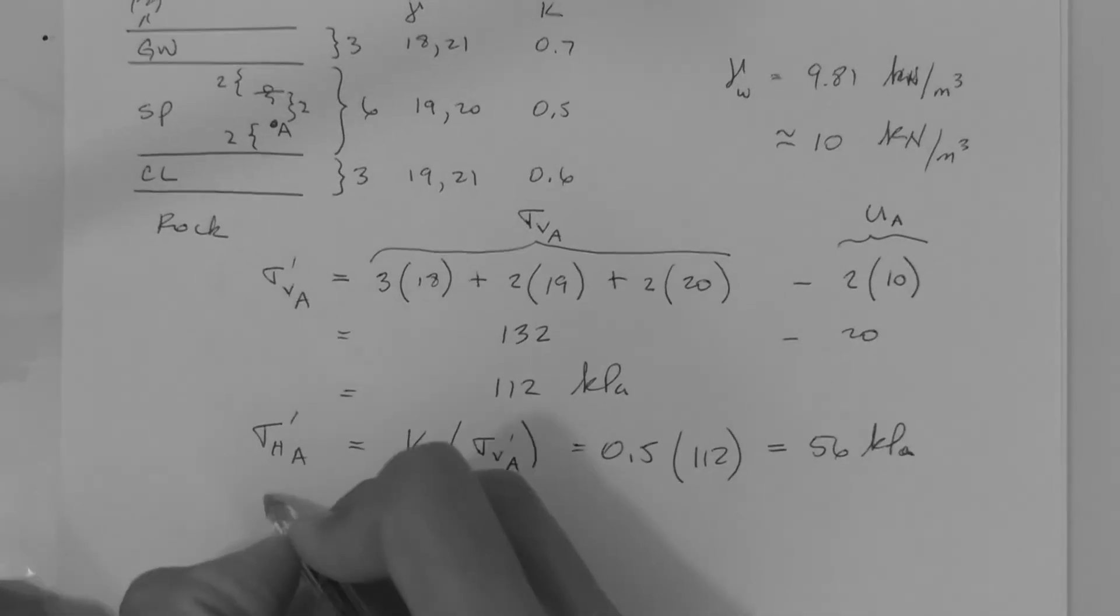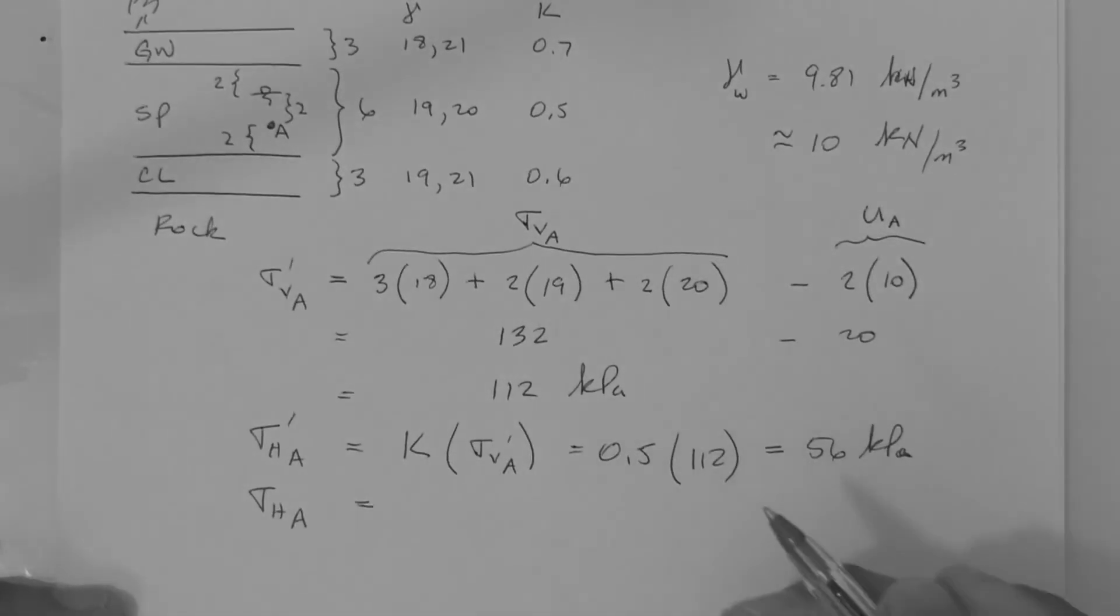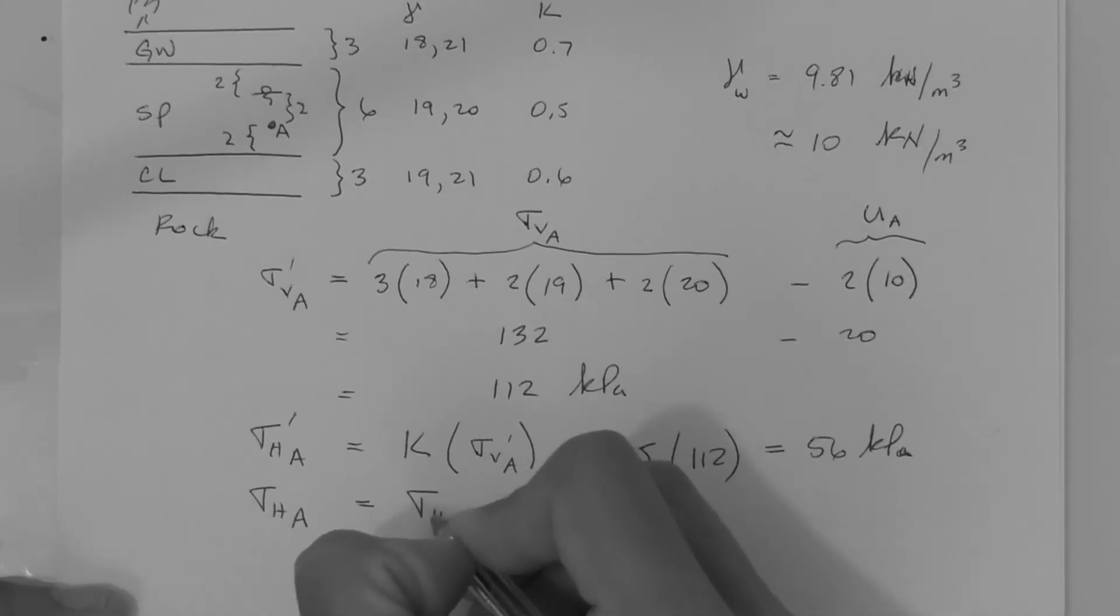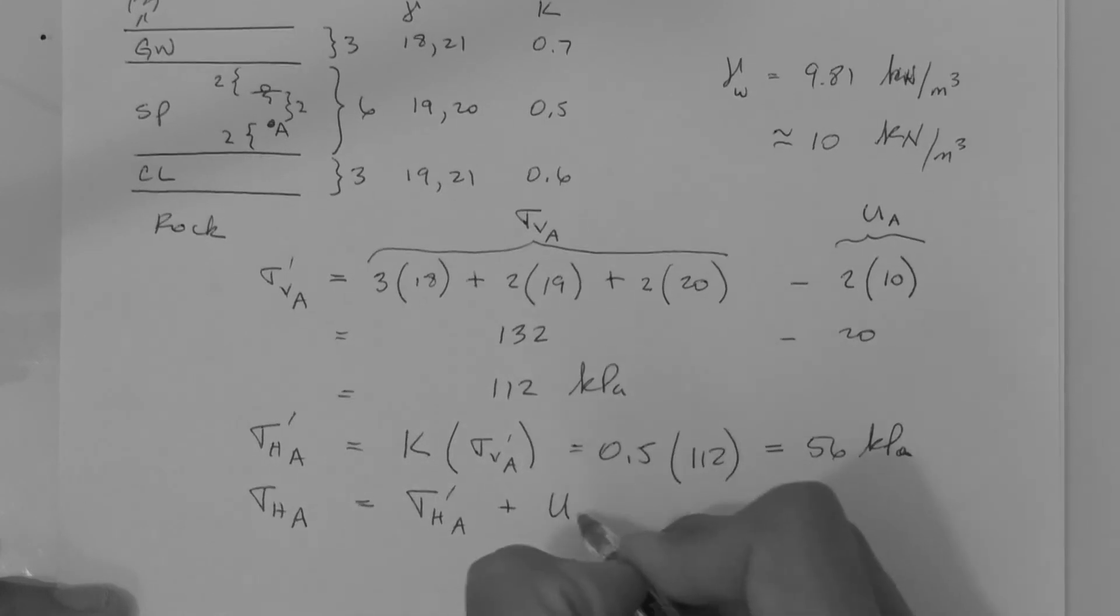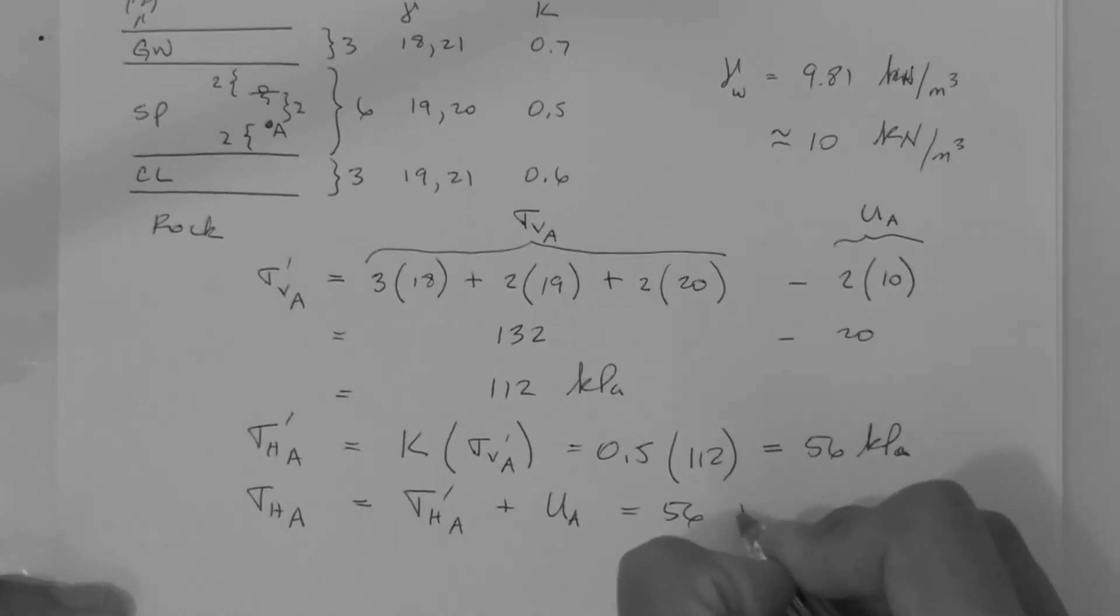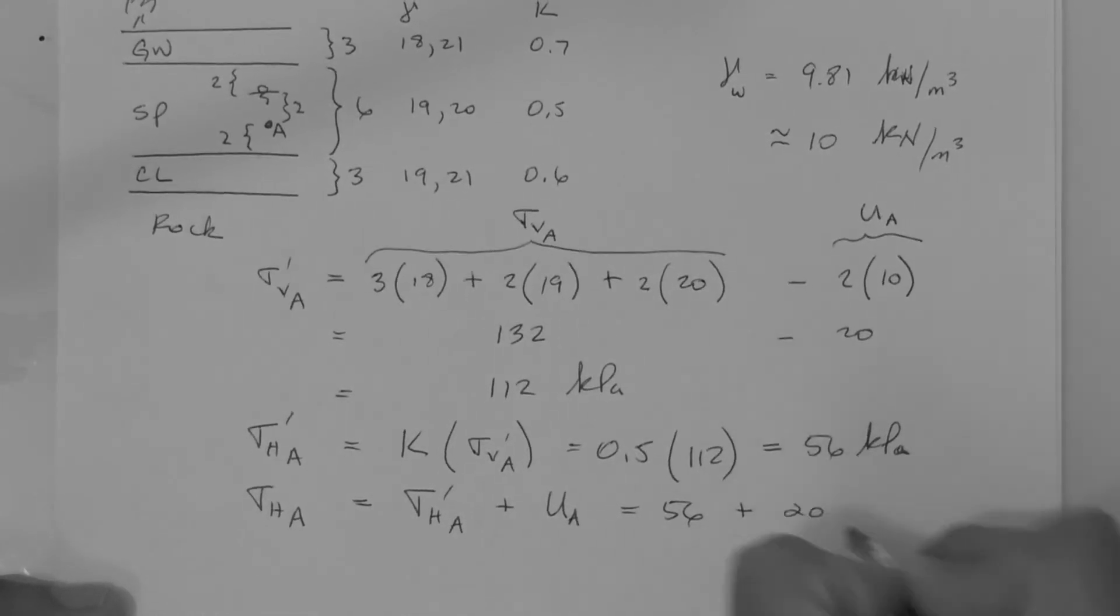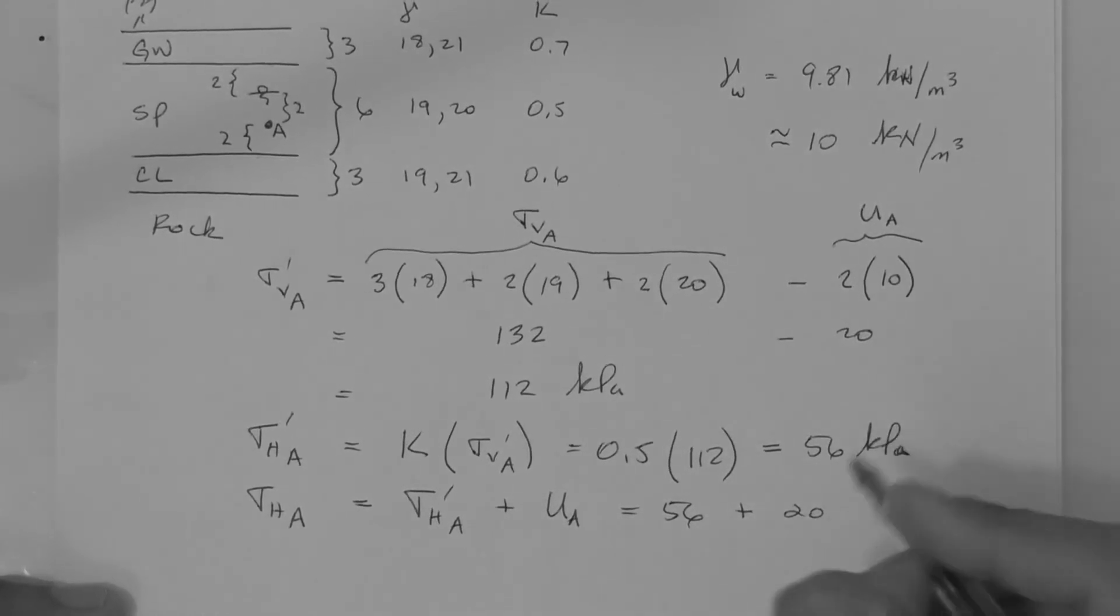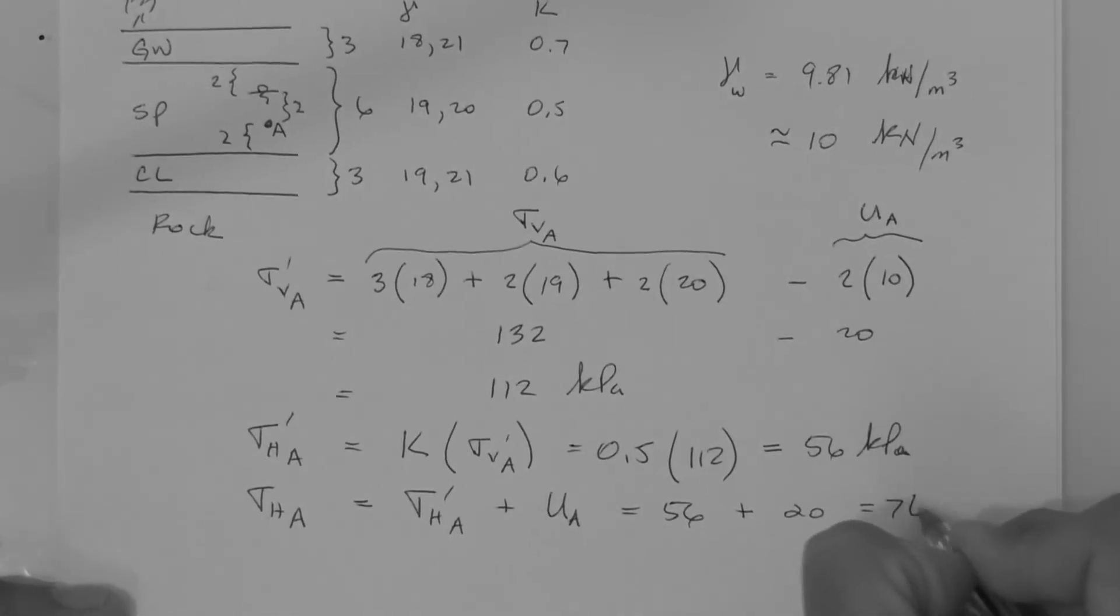While we are at it, we can also find the horizontal total stress at point A. That is simply the horizontal effective stress at point A plus the hydrostatic pore pressure at point A, which is 56 plus 20, giving us 76 kPa.